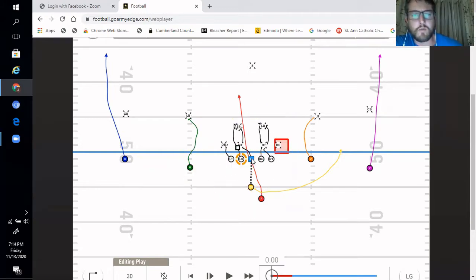All blocking rules stay the same where we are trying to work double teams to the linebackers. The play side guard and center are double teaming the defensive tackle with their eyes to the linebacker. Whichever way that linebacker breaks, they then break off their initial block to then engage the linebacker.